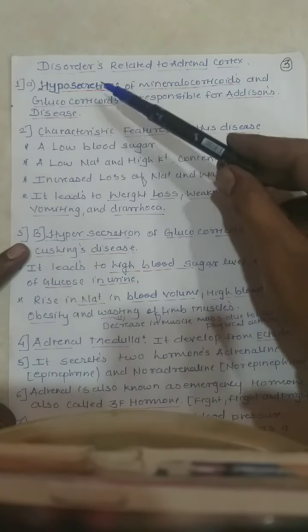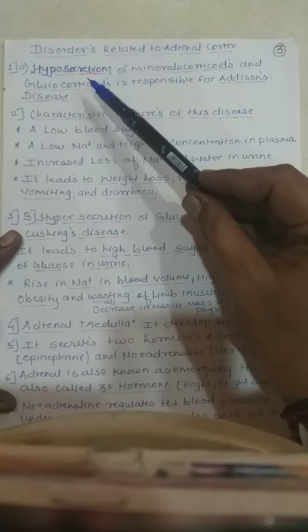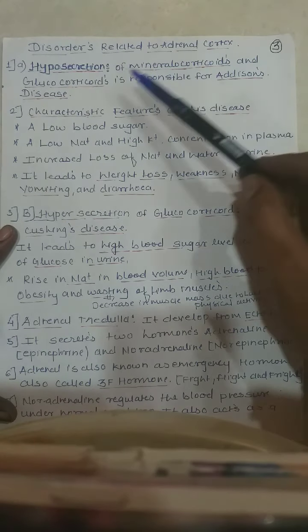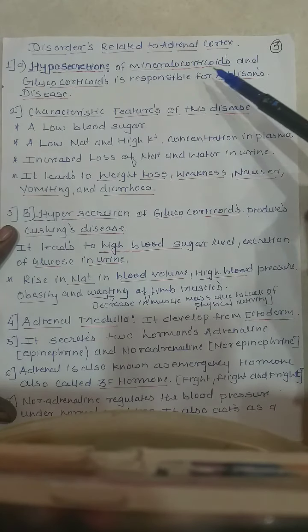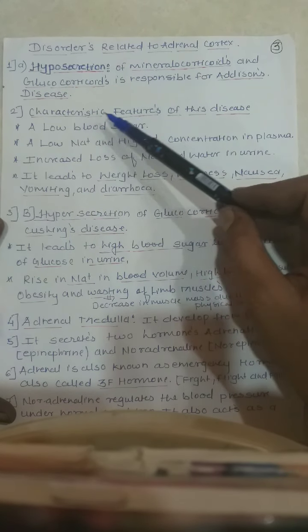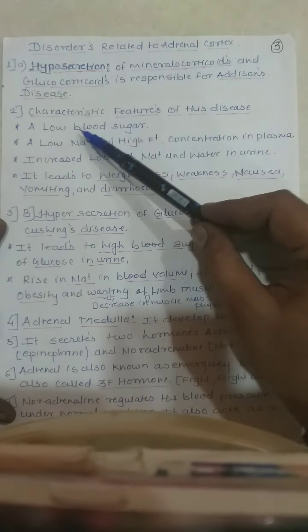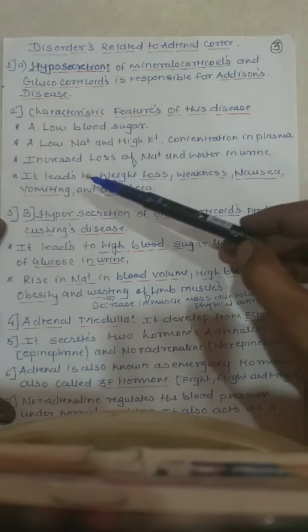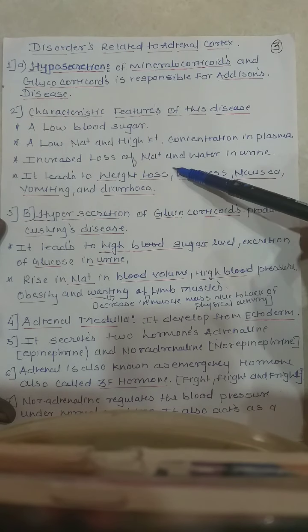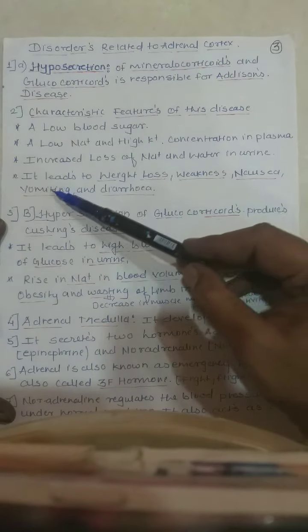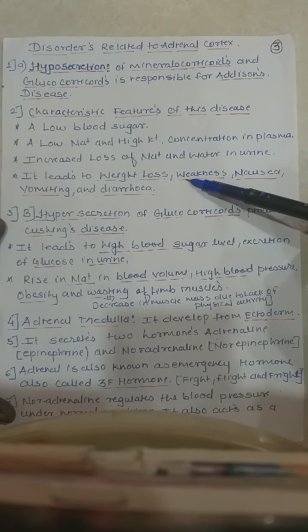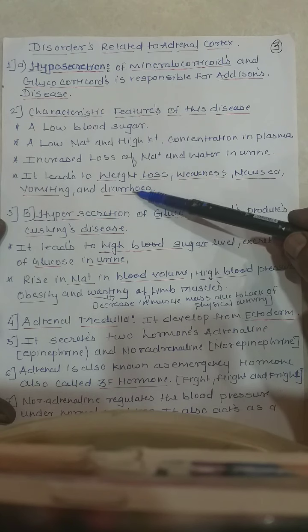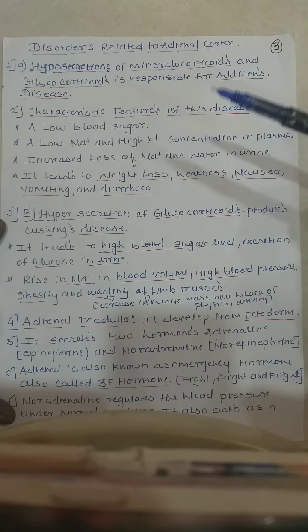Disorders of the adrenal cortex: hyposecretion, meaning low secretion of mineralocorticoids and glucocorticoids, is responsible for Addison's disease. Characteristic features include low blood pressure, low sodium and high potassium concentration in blood plasma, increased loss of sodium and water in the urine, and symptoms of weight loss, weakness, nausea, vomiting, and diarrhea.